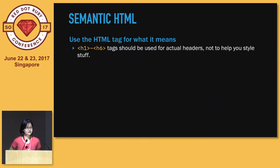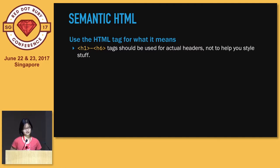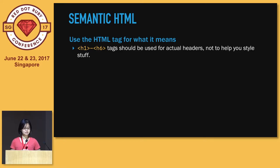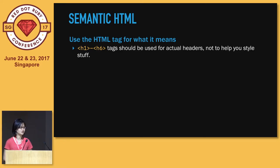First of all, use semantic HTML. For example, if the text is not a header, don't use header text — style it some other way using CSS instead. This is because screen readers let the user skip through header text to quickly skim through an entire page's content. So using it for unintended purposes can actually mask the screen reader experience. And this goes for all other elements as well.